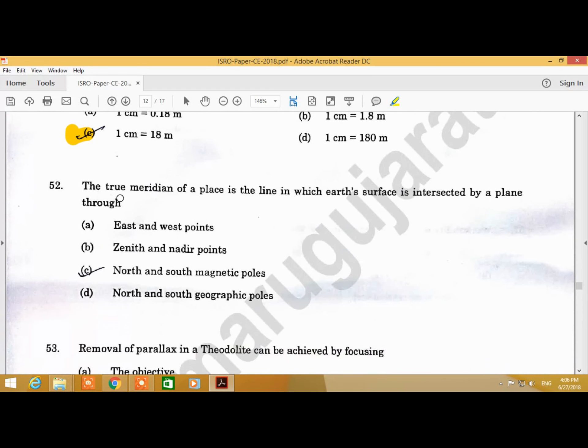Question Number 52: The true meridian of a place is the line in which the earth's surface is intersected by a plane through. Answer is D, north and south geographical poles.